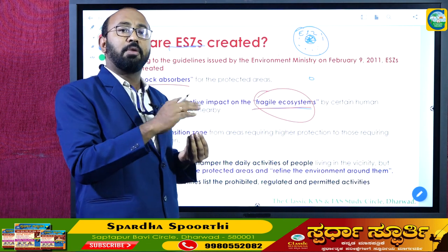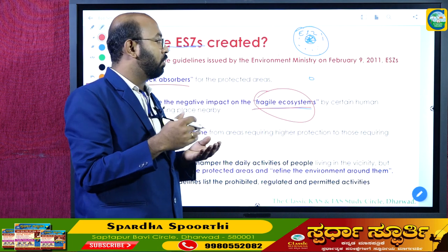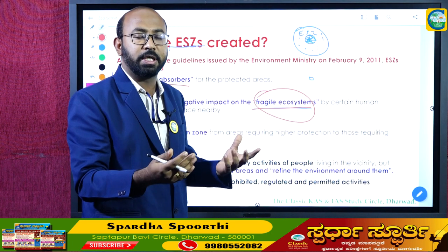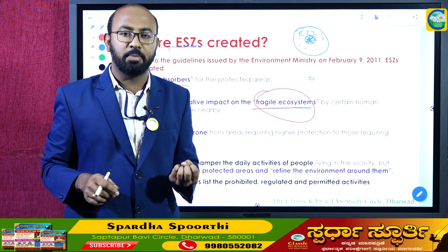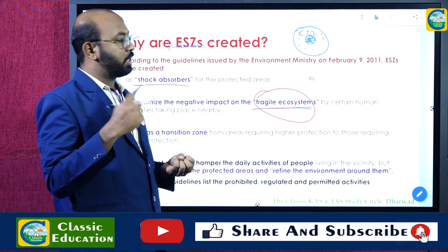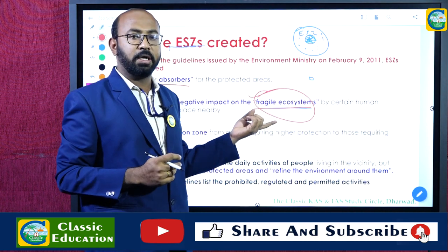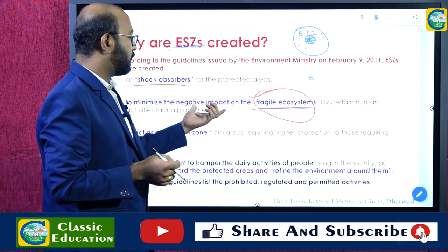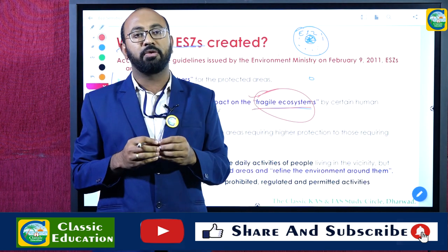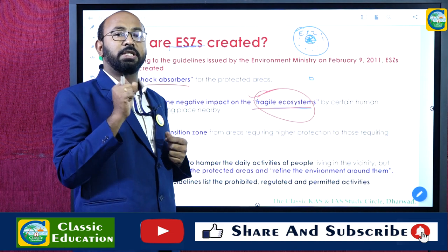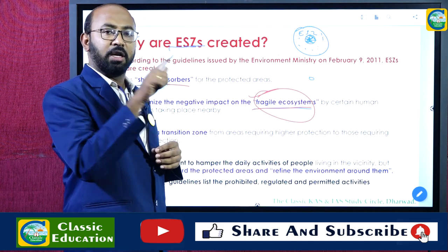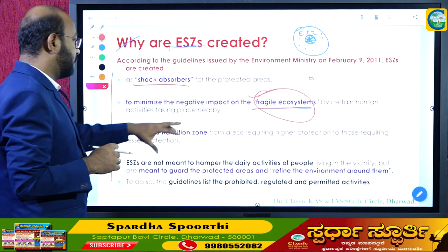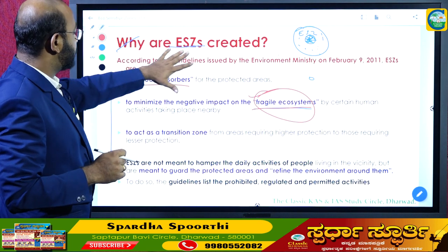Second, ESZs minimize the negative impact on fragile ecosystems. These protected areas are fragile in nature. For example, if tigers — a keystone species — are hunted excessively, their population declines. Then herbivore populations like deer increase, they over-feed on vegetation, plant population comes down, and the whole ecosystem collapses. A small disturbance can cause a chain reaction leading to species becoming extinct within a short period of time.